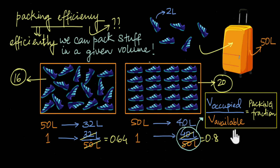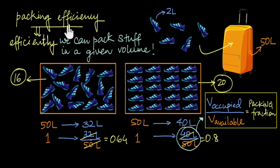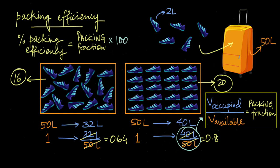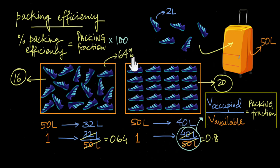The greater the packing fraction, the more volume is occupied per unit available volume, meaning higher packing efficiency. Packing efficiency is generally reported in percentages: percent packing efficiency equals packing fraction multiplied by 100. So randomly throwing shoes gives a packing efficiency of 64%, while the neat arrangement gives 80%.